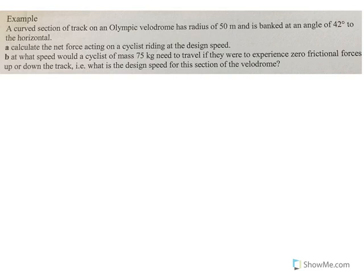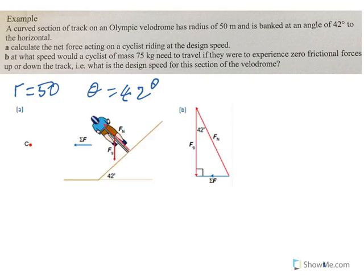Okay, the example here. This is an Olympic velodrome. It's a curved section track. An Olympic velodrome has a radius of 50 meters, and it's banked at an angle of 42 degrees to the horizontal. Part A says, calculate the net force on the cyclist riding at the design speed.